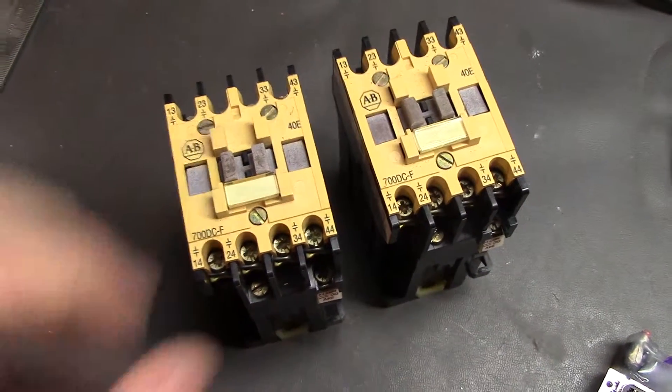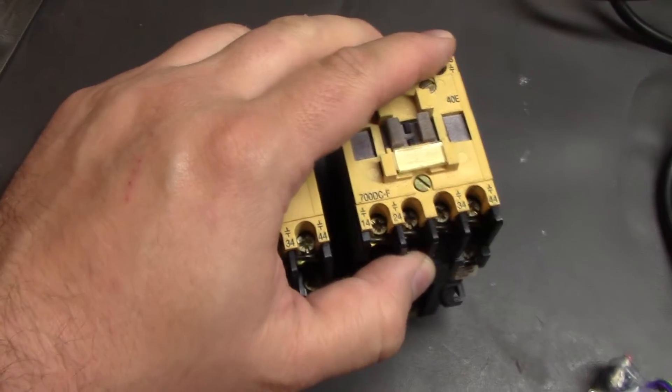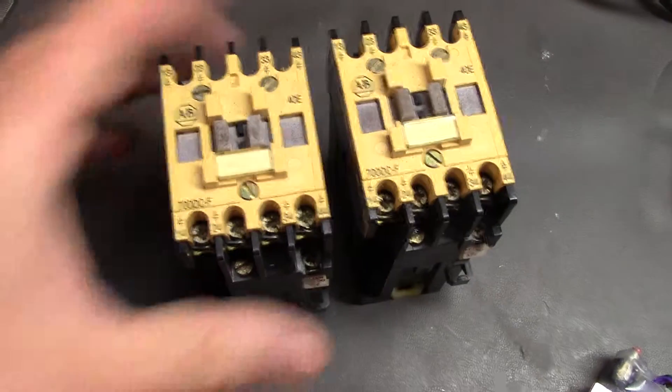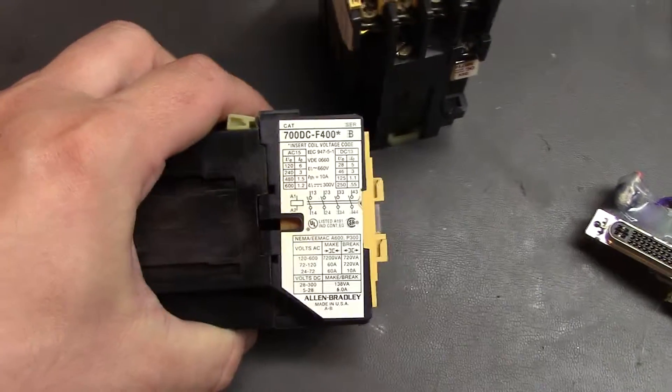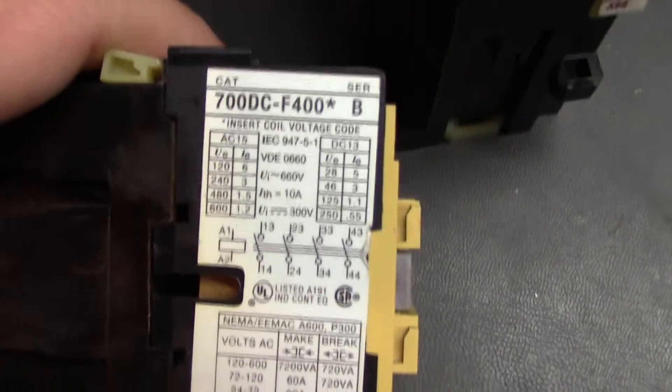Well, today the mailman stopped by and dropped off some goodies for an upcoming project. What I've got here are a couple of large contactors. These are Allen-Bradley 700DC F400s, you can see the cool label there.